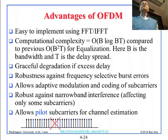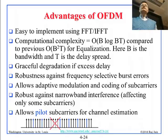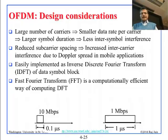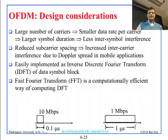So those are the advantages of OFDM. Regarding design: a large number of carriers is better, though it costs more because you need a chip that can handle that many. More carriers means smaller data rate per carrier and larger symbol duration. At 10 megabits, each bit is 0.1 microseconds; at 1 megabit it is 1 microsecond; at 0.1 megabit it is 10 microseconds. The smaller the rate, the larger the bit in time.